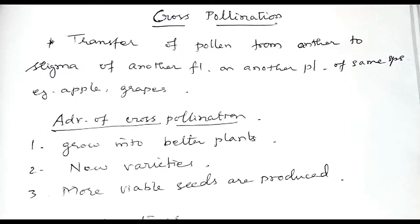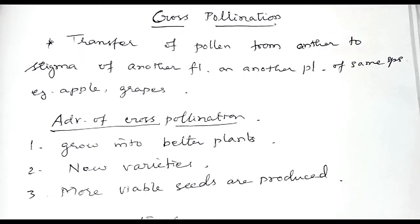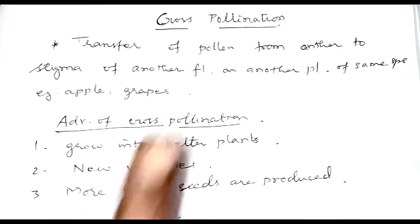Let us learn what cross-pollination is. Cross-pollination is the transfer of pollen grains from the anther of a flower to the stigma of a flower on another plant of the same species. Examples are apple, grapes, plum, etc.